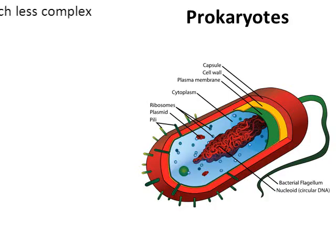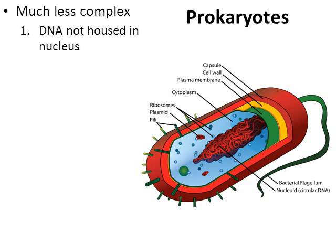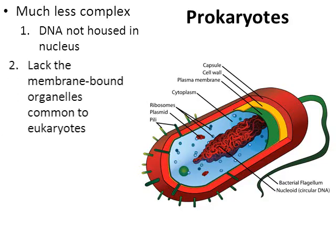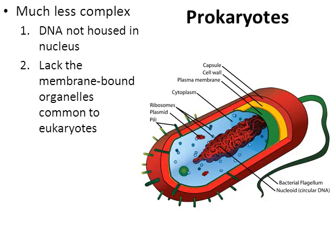Next, I want to mention the prokaryotes. Much less complex, and what makes them less complex is the fact that they do not have a nucleus — and it's not just that they don't have a nucleus, but they also lack most of those organelles we just went through. When you look at the diagram, they do have a few organelles in common with eukaryotes: ribosomes, cytoplasm, the cell wall, and the cell membrane — but that's really about it. Prokaryotes lack membrane-bound organelles: no mitochondria, no vacuoles, no chloroplasts, no Golgi apparatus.